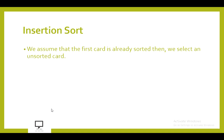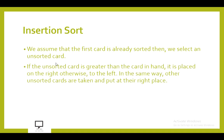So what we did in the previous example: the first card was assumed to be already sorted, and then we selected a card from the unsorted list — the deck kept aside — and picked the cards one by one. After this, the next step is comparison. After doing the comparison, we decide: if the unsorted card is greater than the card in hand, it is placed on the right side; if it is less, we move it to the left. In the same way, all remaining cards are taken one by one from the deck and placed at their correct position.